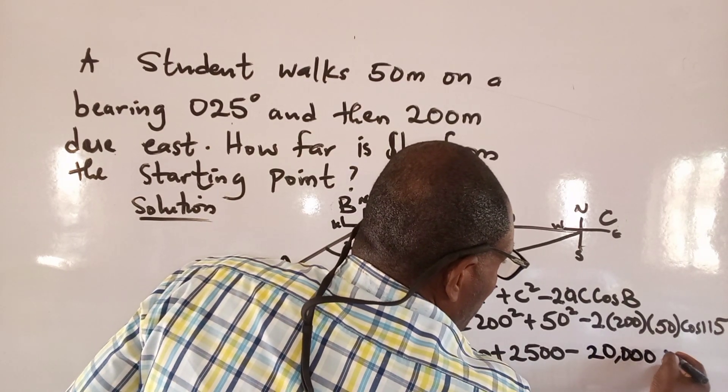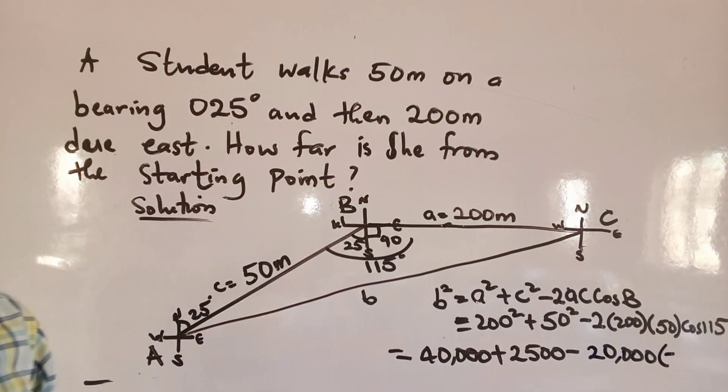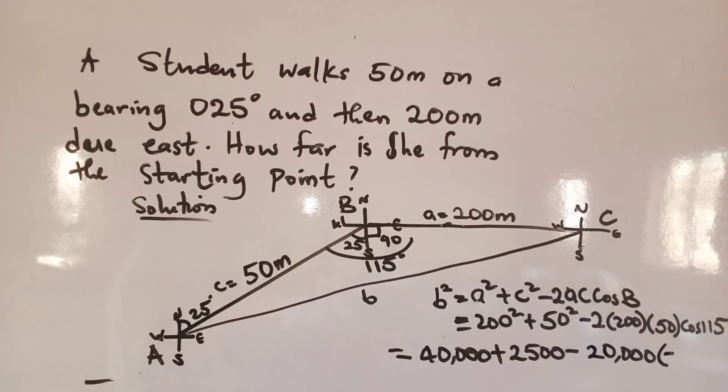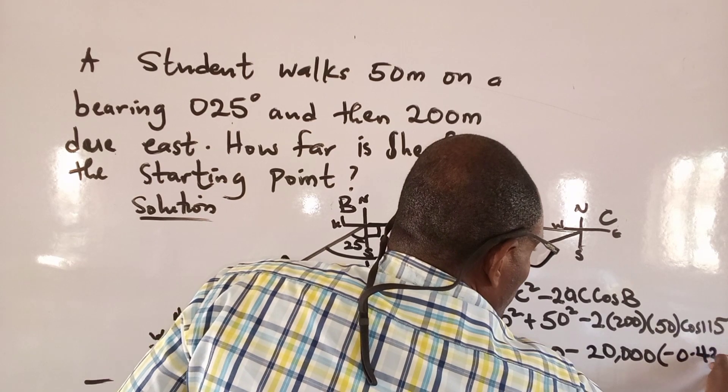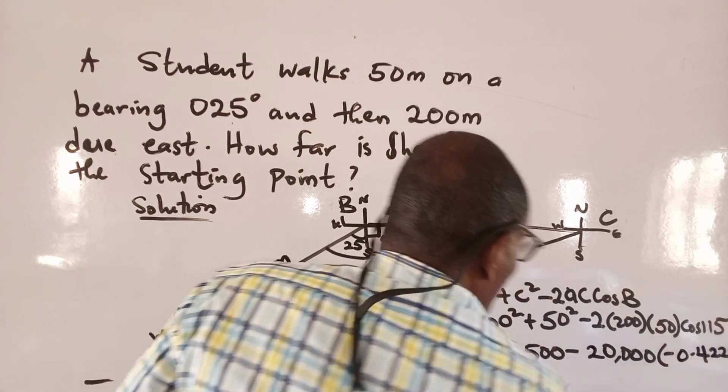Then what is cos 115? Press the calculator. Minus 0.4226.